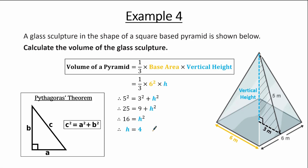Substituting h equals 4, the volume of the pyramid equals one-third multiplied by 6 squared multiplied by 4, which equals 48 meters cubed — meters because the units are meters. This example was more challenging because we needed to use Pythagoras' theorem to first find the vertical height before finding the volume of the pyramid.